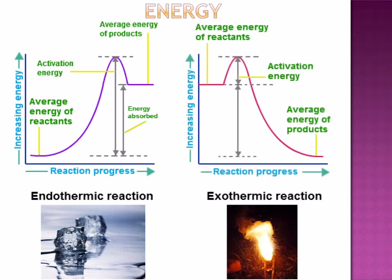If the products of a reaction have less energy than the reactants and energy is released, we say it's an exothermic reaction — for example, striking a match. Notice the difference in the graphs between endothermic and exothermic: endothermic requires energy input, whilst exothermic gives out energy.